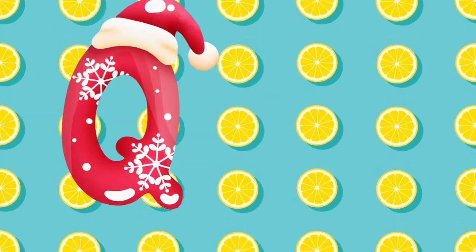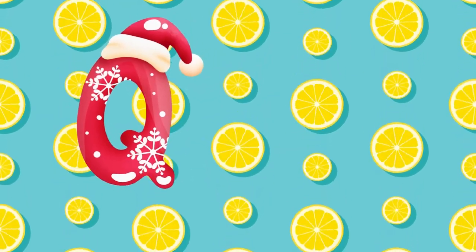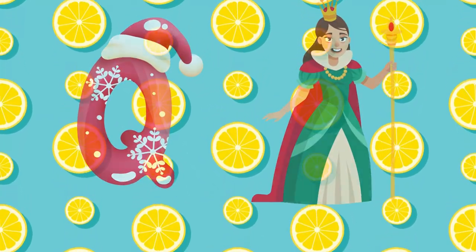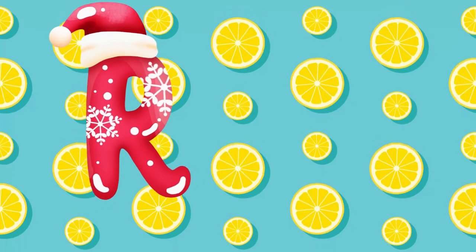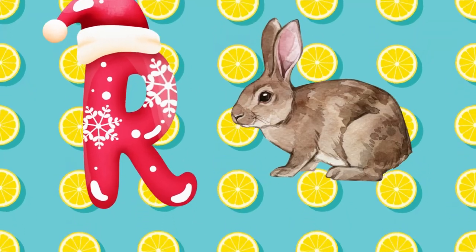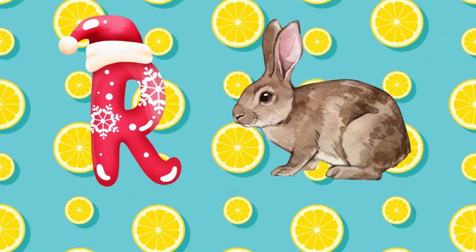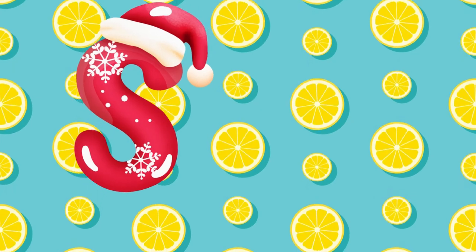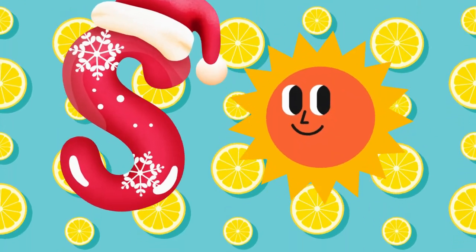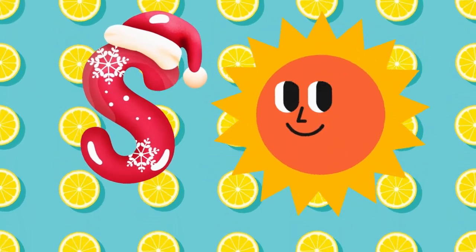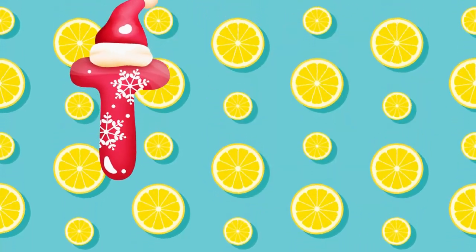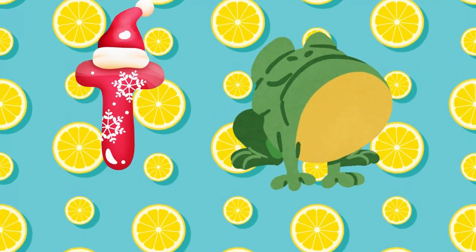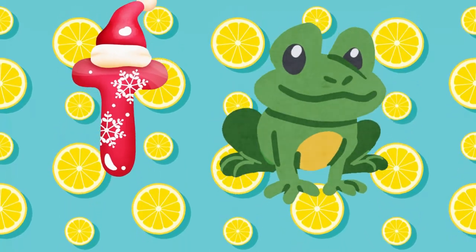Q is for queen, q-q-queen. R is for rabbit, r-r-rabbit. S is for sun, s-s-sun. T is for toad, t-t-toad.